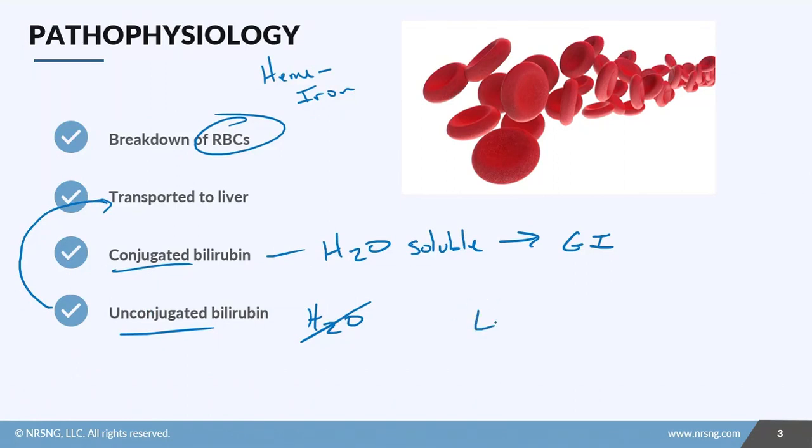What happens is when your patients have liver dysfunction, this process doesn't happen. Because it doesn't happen, you have this increase, this accumulation of unconjugated bilirubin, which means your bilirubin level goes up.